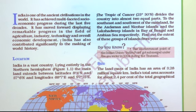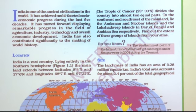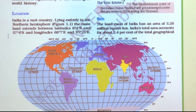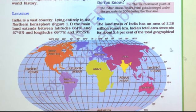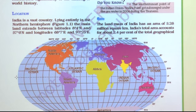Now we are going to study about the location. See students, a map is here — this globe map. When we come to the location, how do we decide one country's location? See here — our world. This center line is called the equator.